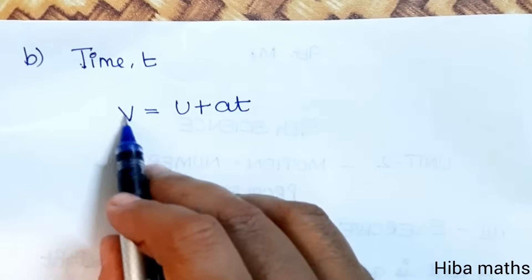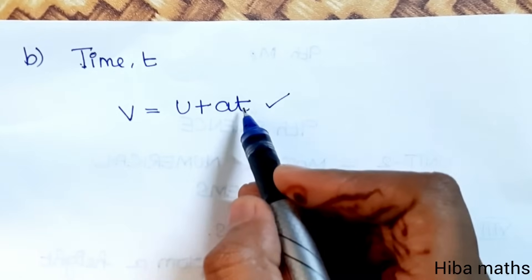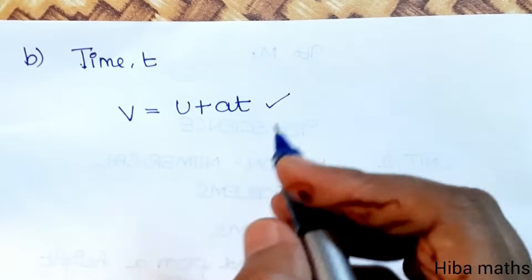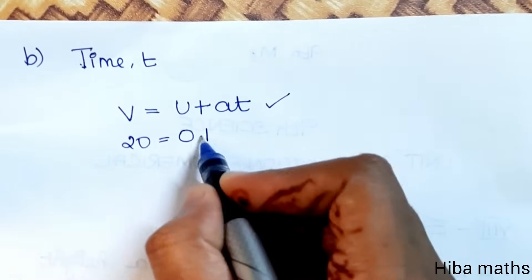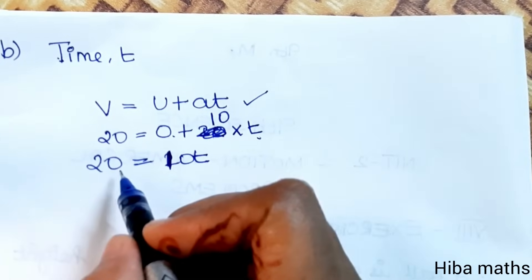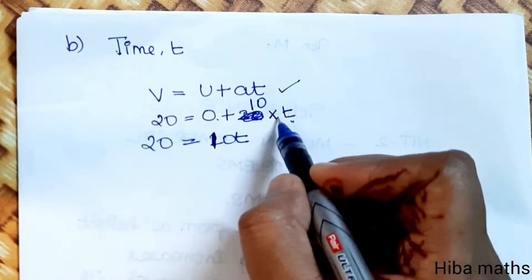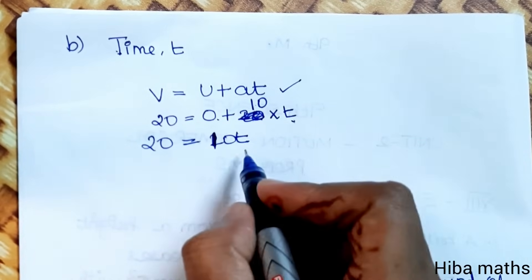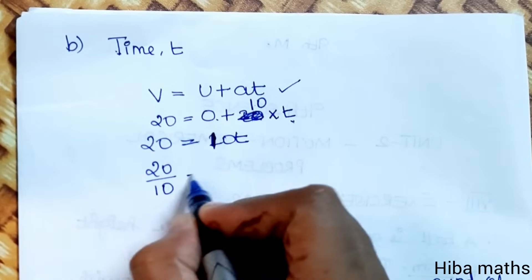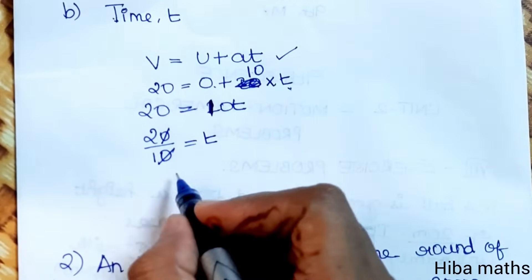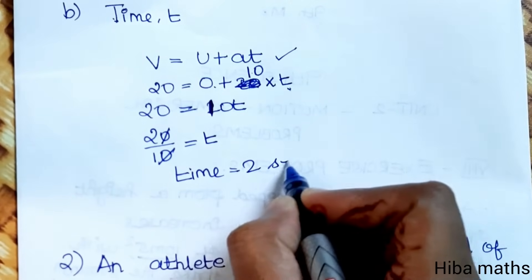Now to calculate the time, we use the formula v is equal to u plus at. We have v equal to 20, u equal to 0, and a equal to 10. So 20 equals 0 plus 10 into t, giving 10t equals 20, therefore t is equal to 2 seconds.